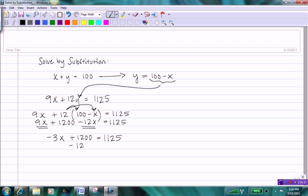Now I'm going to subtract 1200 from both sides, which gives me negative 3X equals negative 75. Finally, I'm going to divide both sides by negative 3, which gives me X equals positive 25.